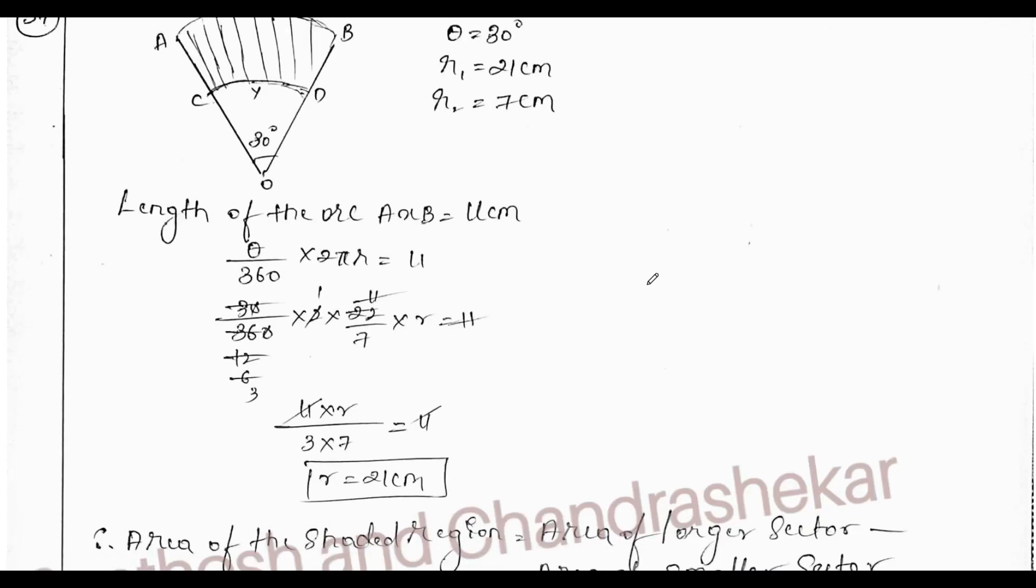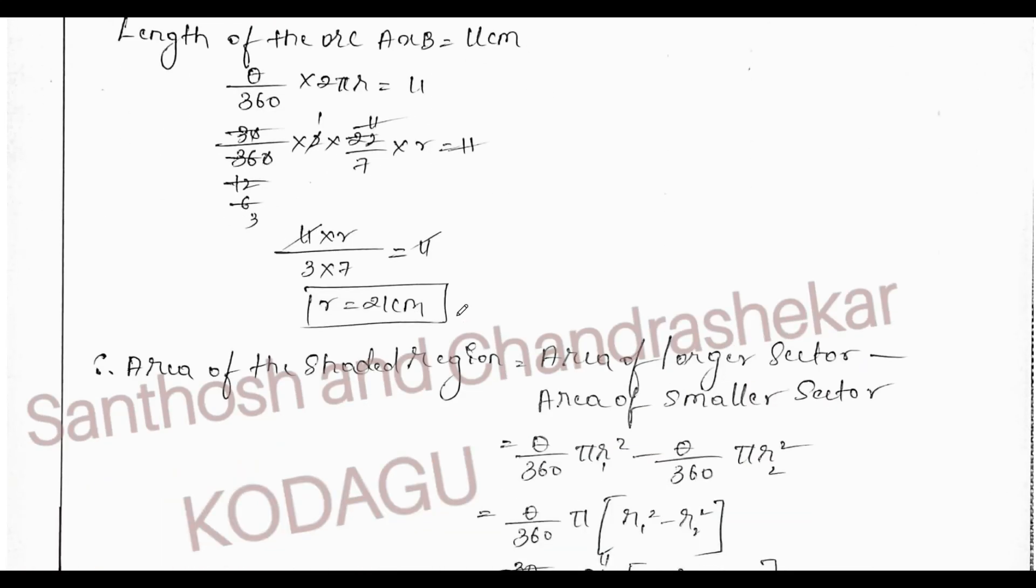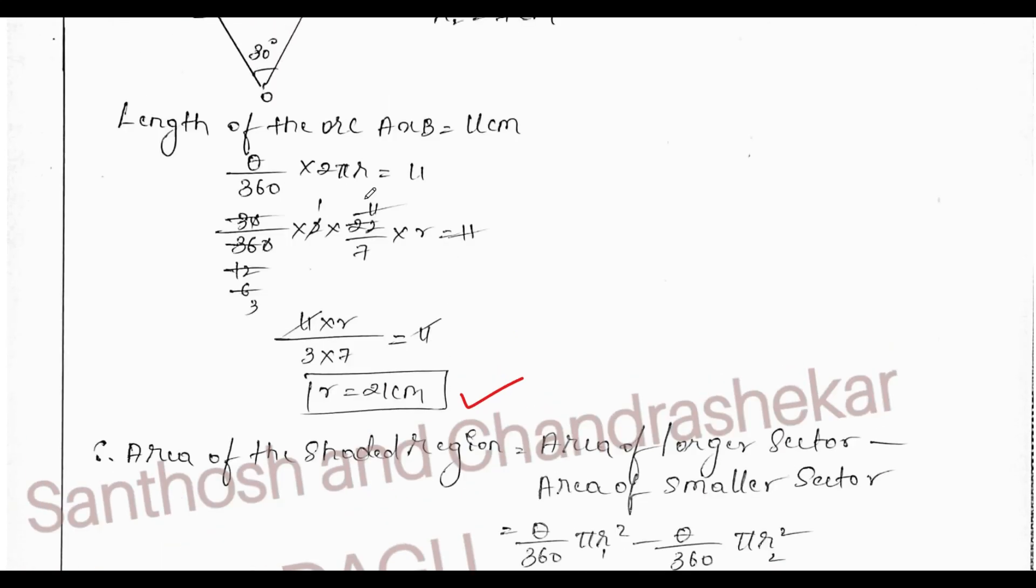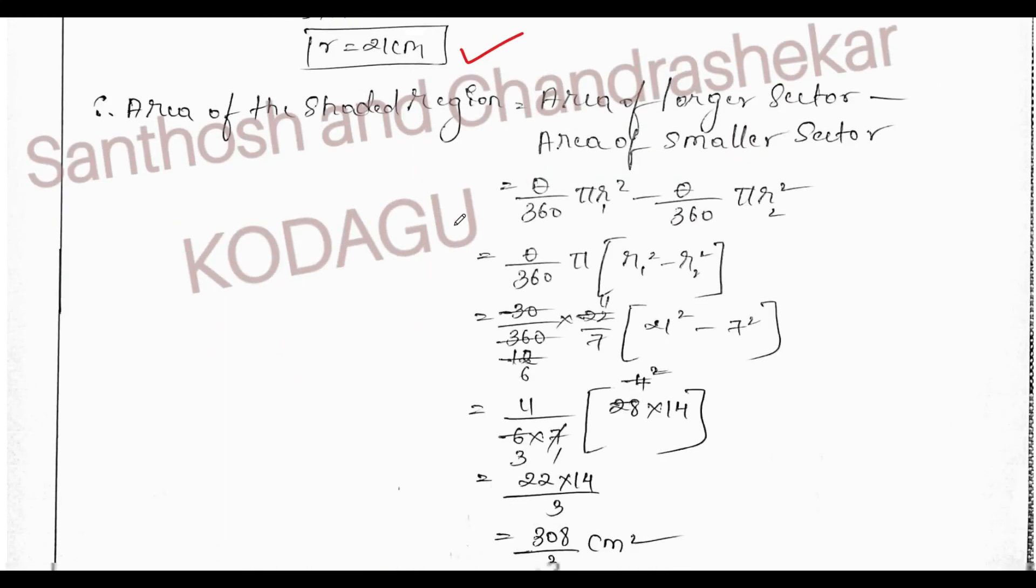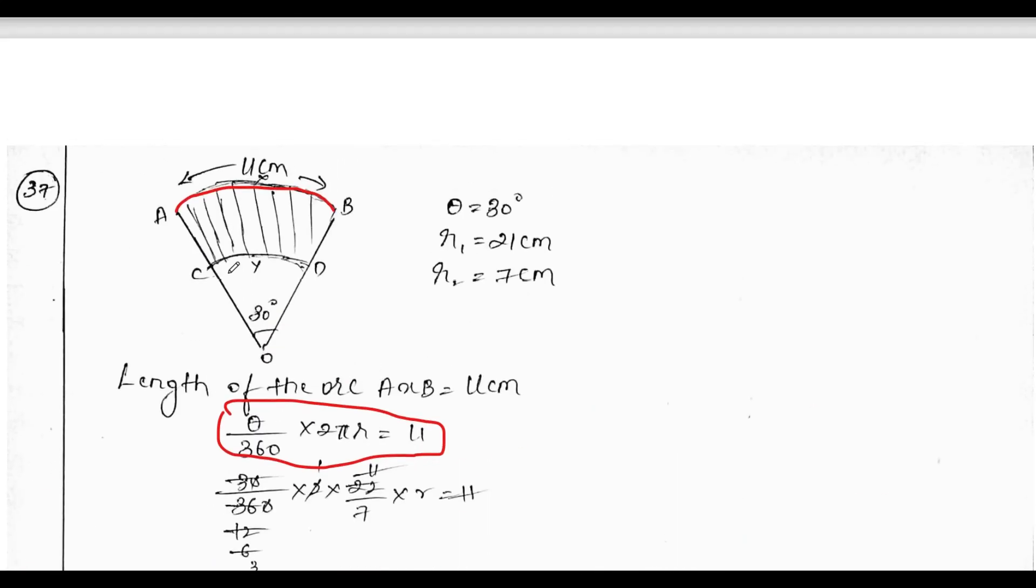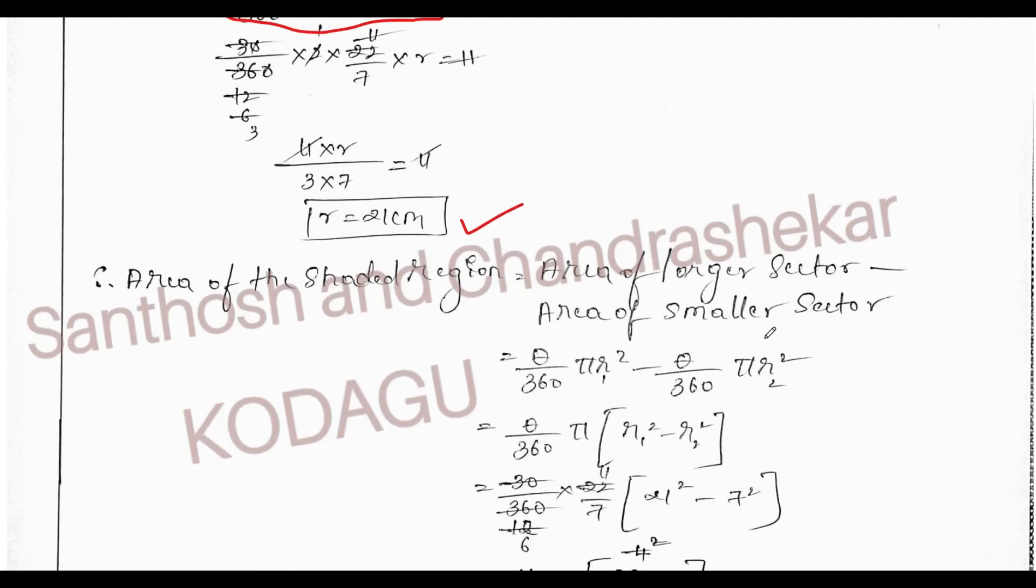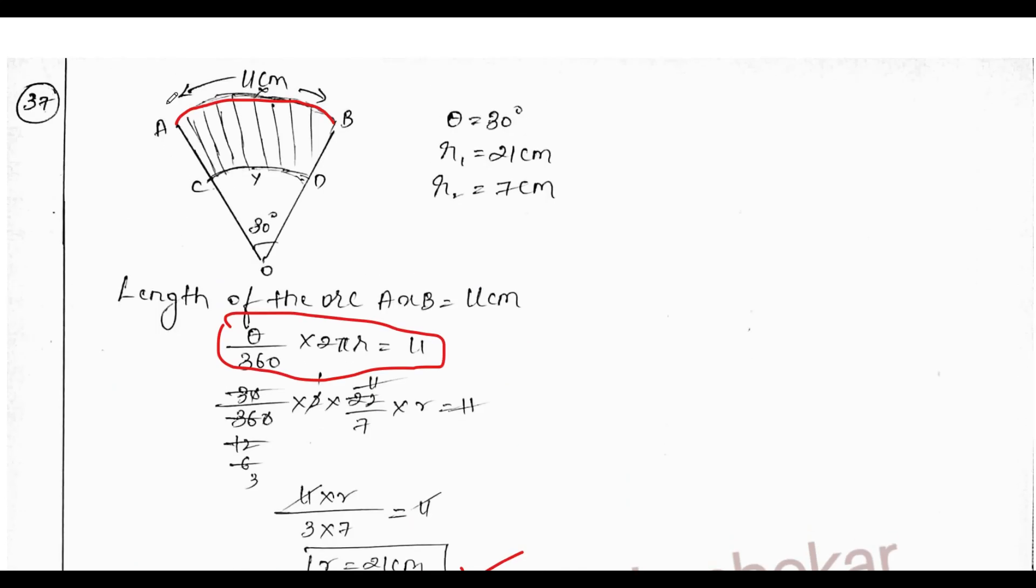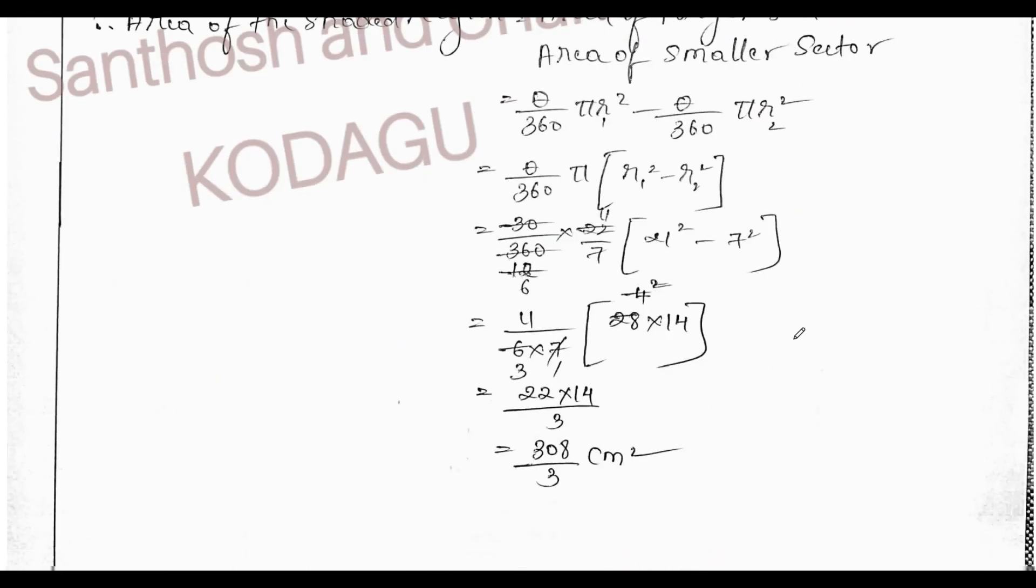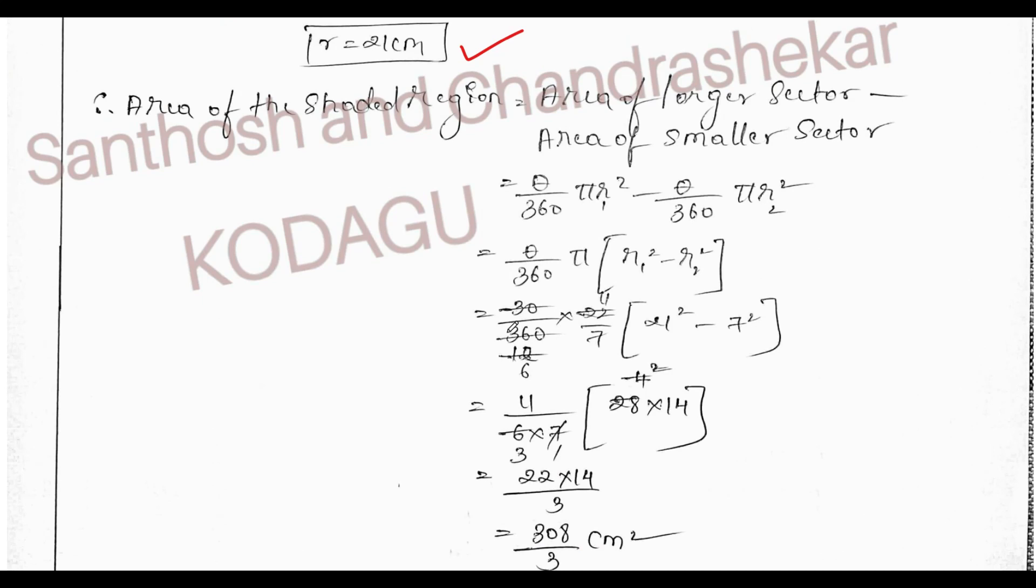Now, this is a little bit application based question where the arc length is given. First, we need to find out the radius. Then, using the length of arc formula, we need to find out the area of the shaded region. That is, the area of shaded region is area of larger sector minus area of smaller sector. We get 308 by 3 centimeter square.